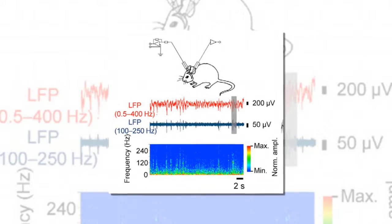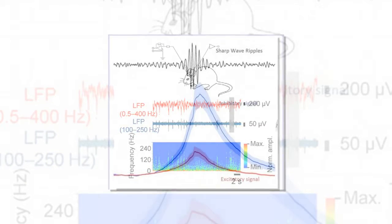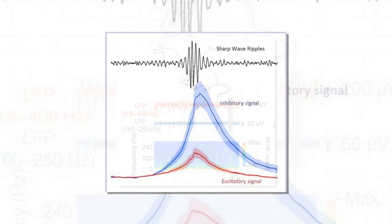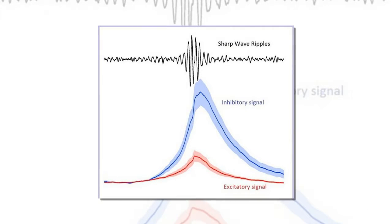When neurons oscillate in synchrony, their electrical activity adds together so that measurements of field potential can pick them up, and SWRs are reported as the most synchronous oscillations in the brain.